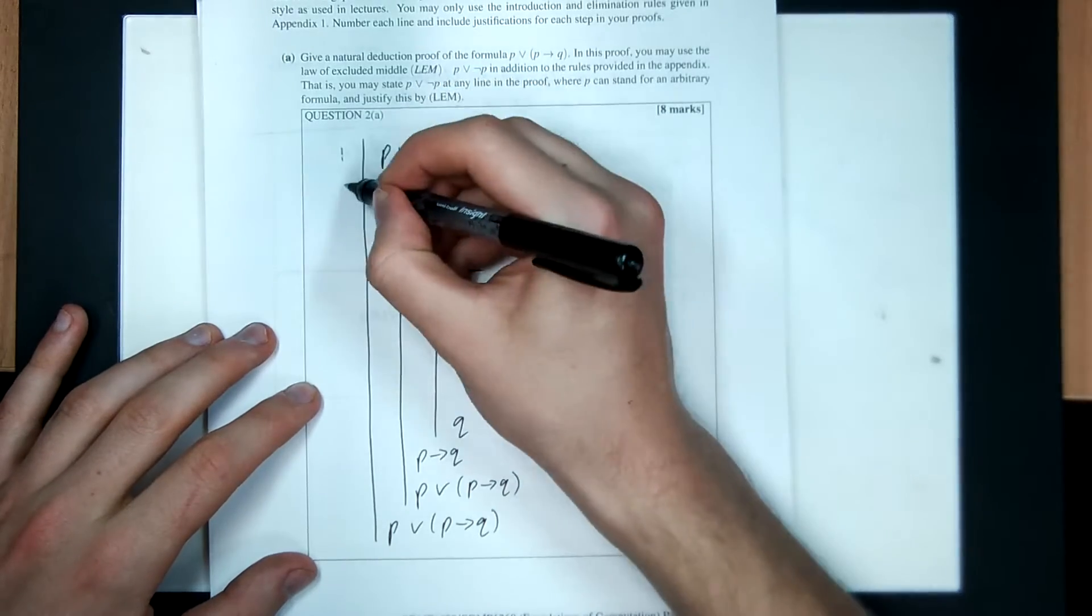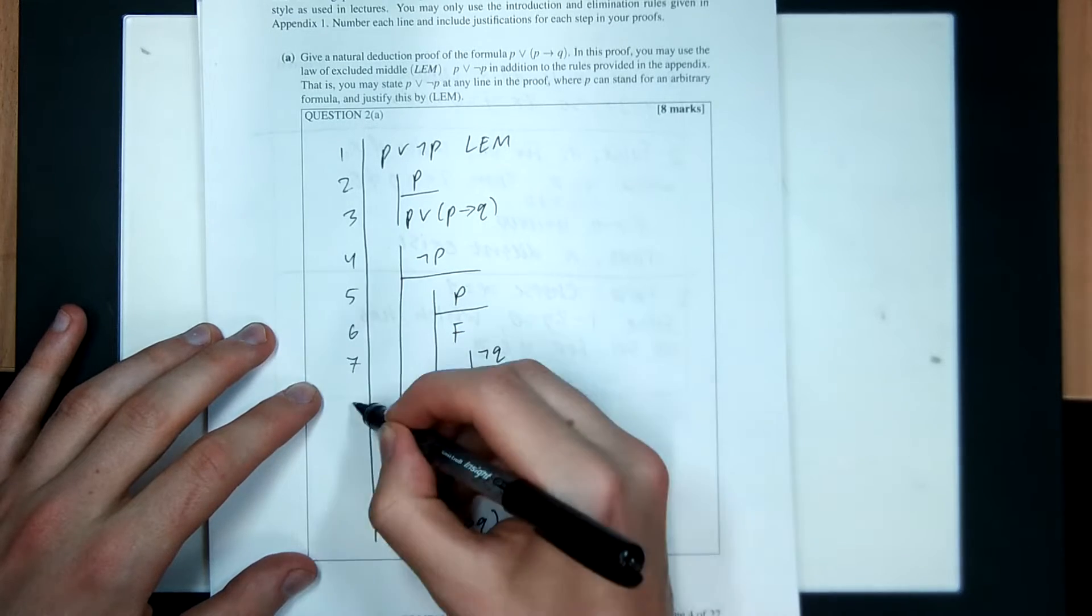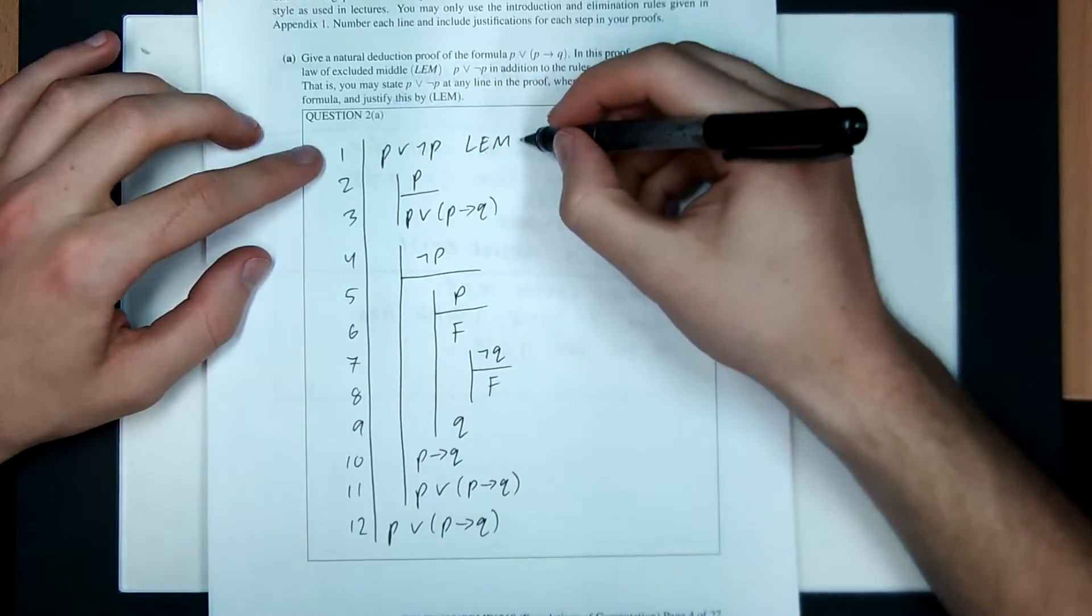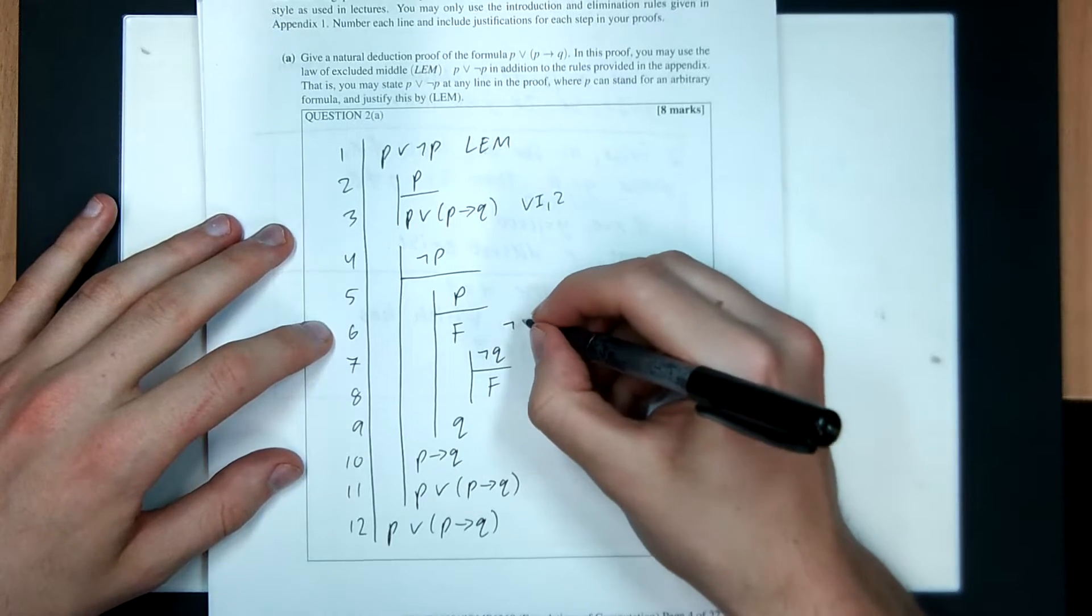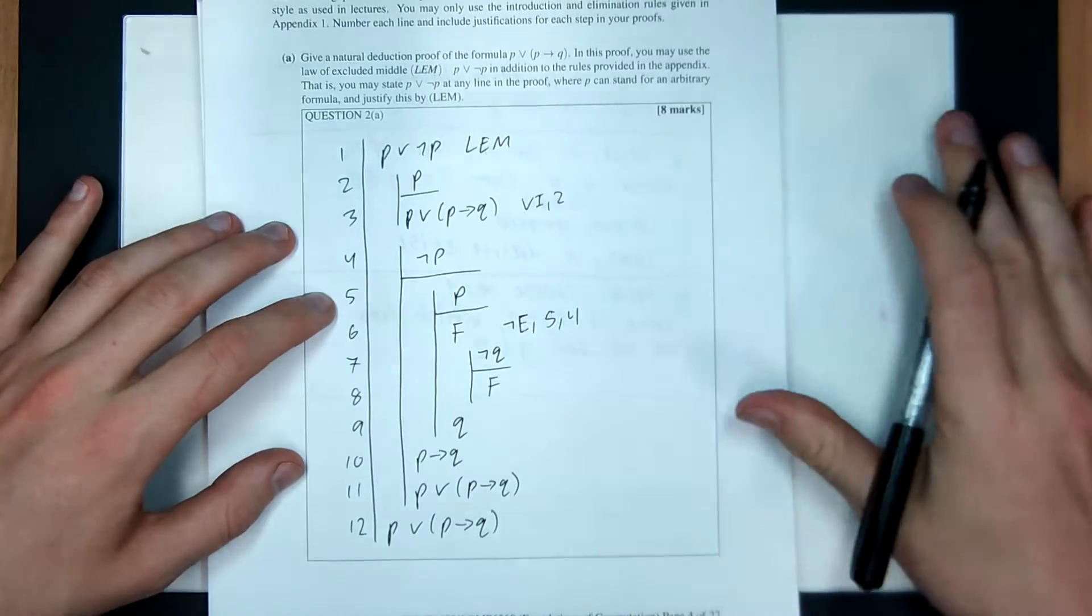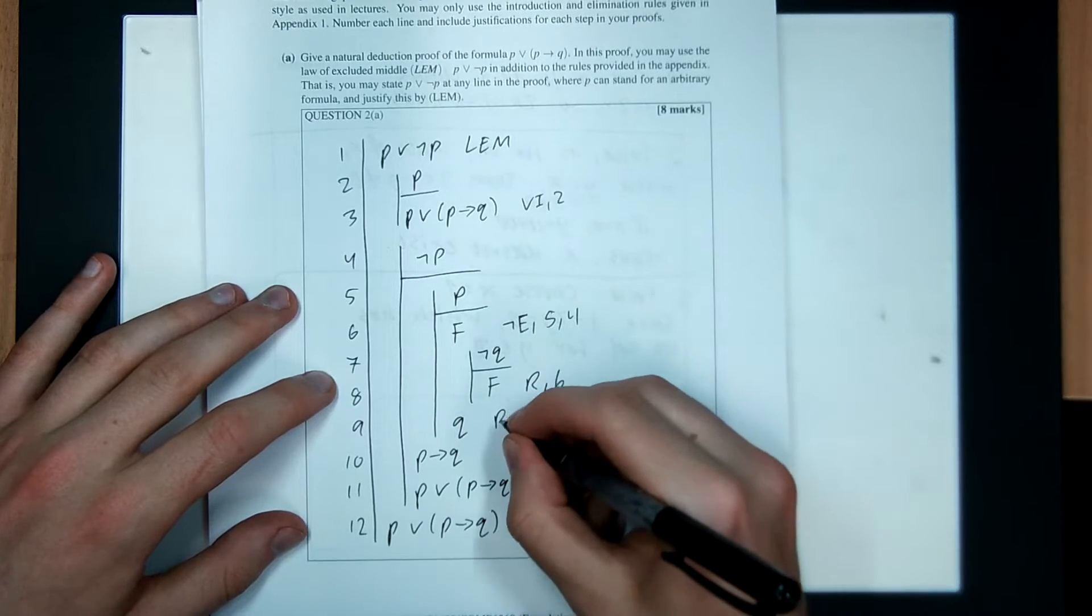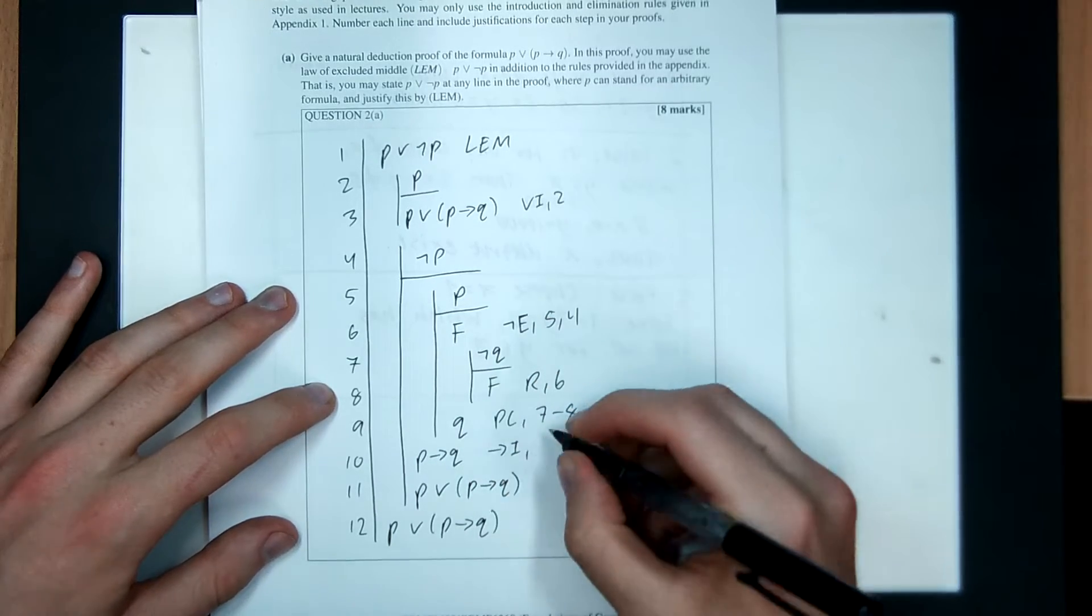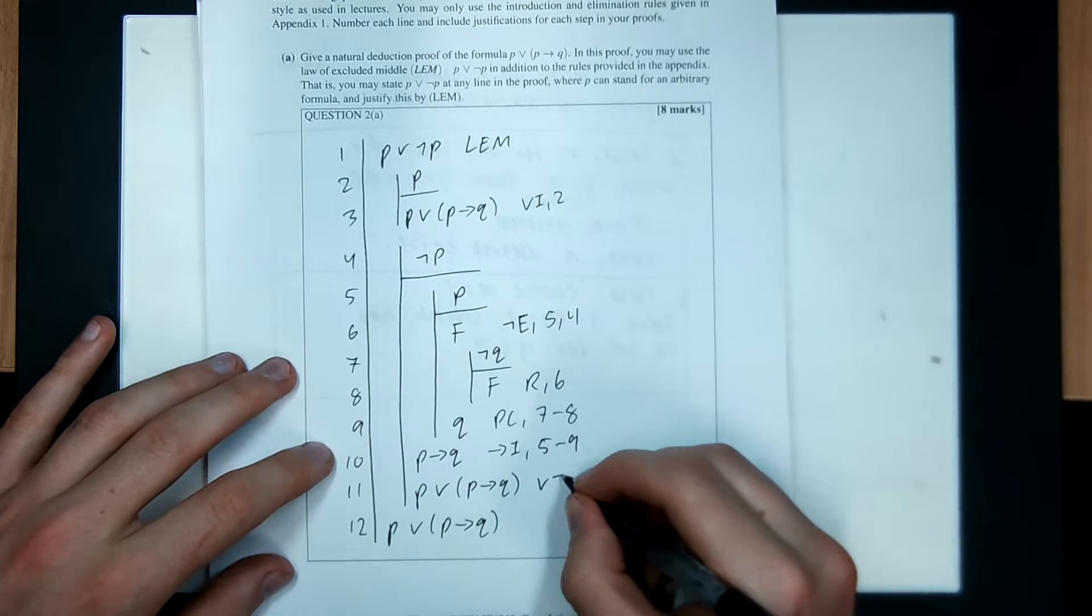There we go. Okay, so now I better put in my line numbers or the guy who marked this, that is David, will dock me a bunch of marks. I don't want that to happen. So, better put in my rules and stuff. Okay, that was true by LEM. That was an assumption, OR introduction of 2. Assumption, assumption, not elimination, lines 5 and 4. I'm going off memory here. You should have a copy of the rules next to you. Assumption, steal the false from line 6. Proof by contradiction, lines 7 through 8. Assume P, derive Q, therefore P implies Q by implication introduction 5 through 9.